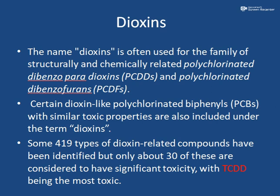The name dioxin is often used for the family of structurally and chemically related polychlorinated dibenzo-para-dioxins and polychlorinated dibenzofurans. Certain dioxin-like polychlorinated biphenyls with similar toxic properties are also included under the term dioxin. Almost 419 types of molecules are related to dioxin compounds, and only 30 of them are considered to be of significant toxicity, with TCDD being the most toxic.